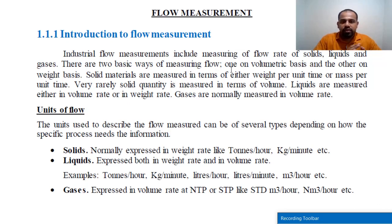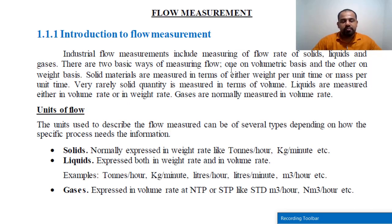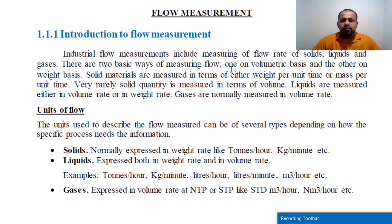One is on a volumetric basis, and the other is on a weight basis. We need flow measurement. One calculates flow rate on a volumetric basis, the other on a weight basis. Solid materials are measured in terms of either weight per unit time or mass per unit time. The amount of fluid is measured in terms of volume. When the liquid is measured, it can be in the volume rate or in the weight rate.